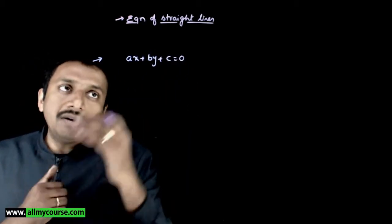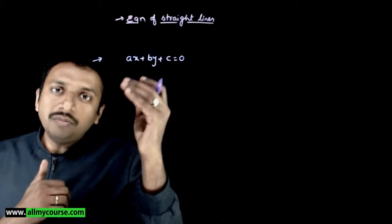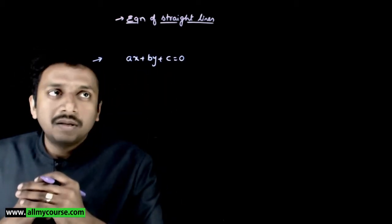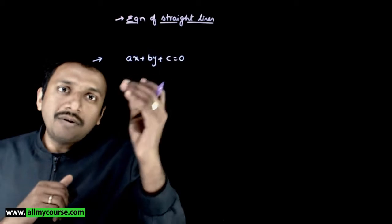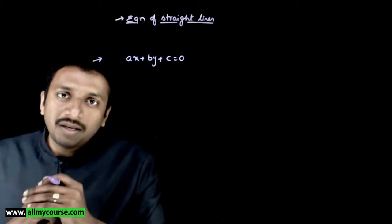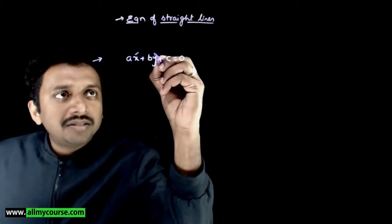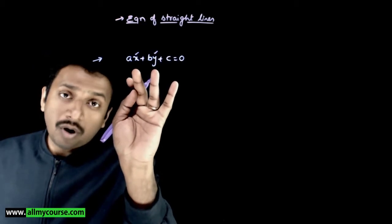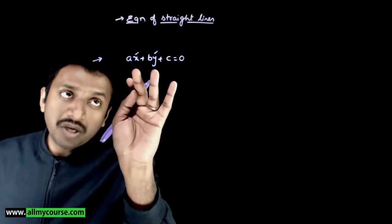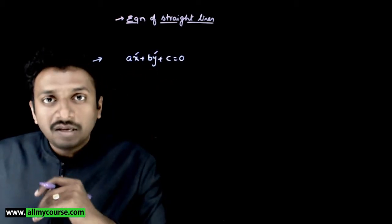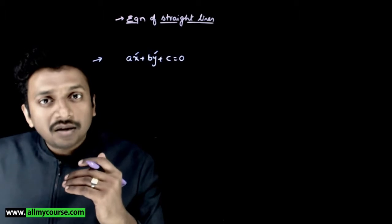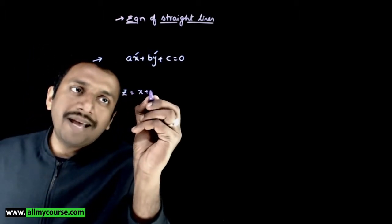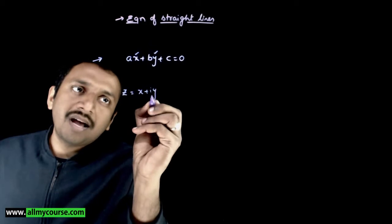Now let us try to convert this into the equation in the Argand plane. When we convert the equation into the Argand plane, a general point on the straight line in the coordinate equation is (x, y). So in the Argand plane, the general point is taken as z equals x plus iy.